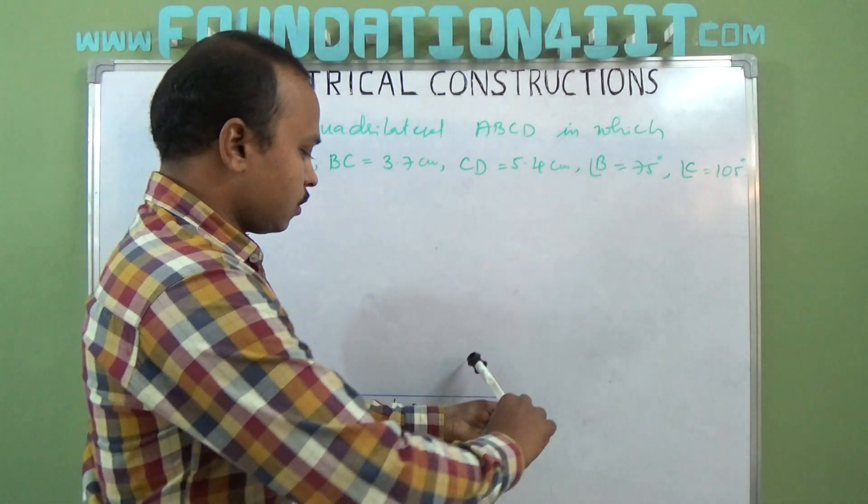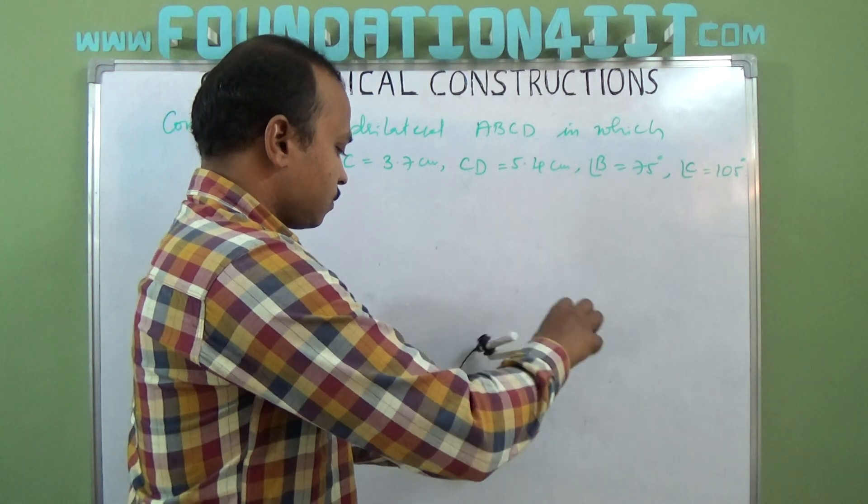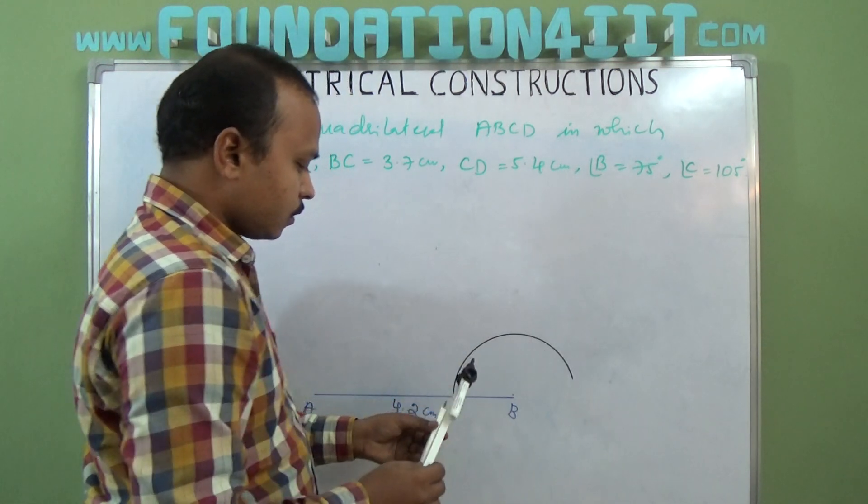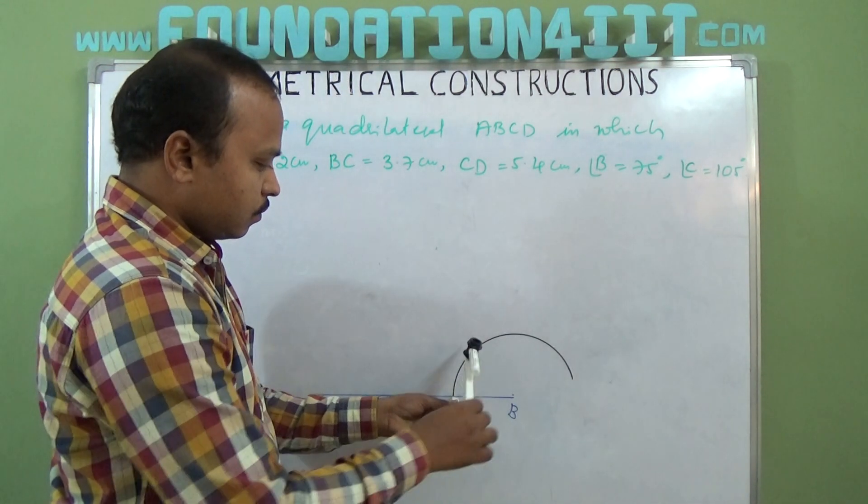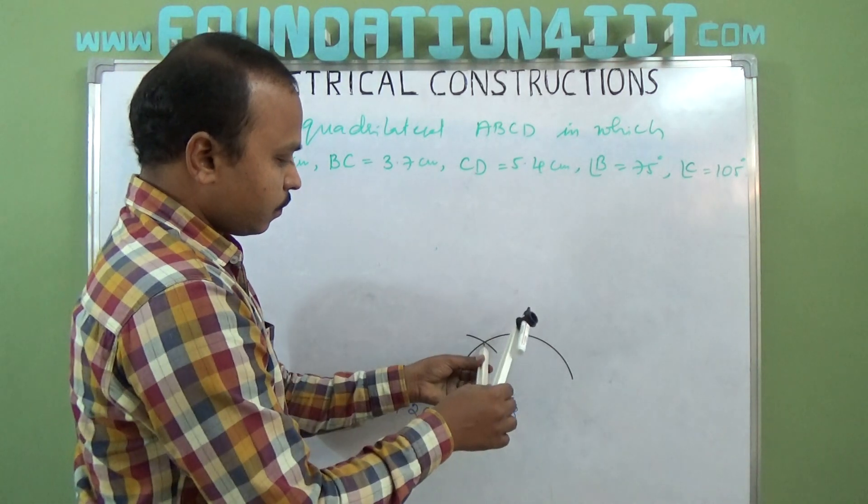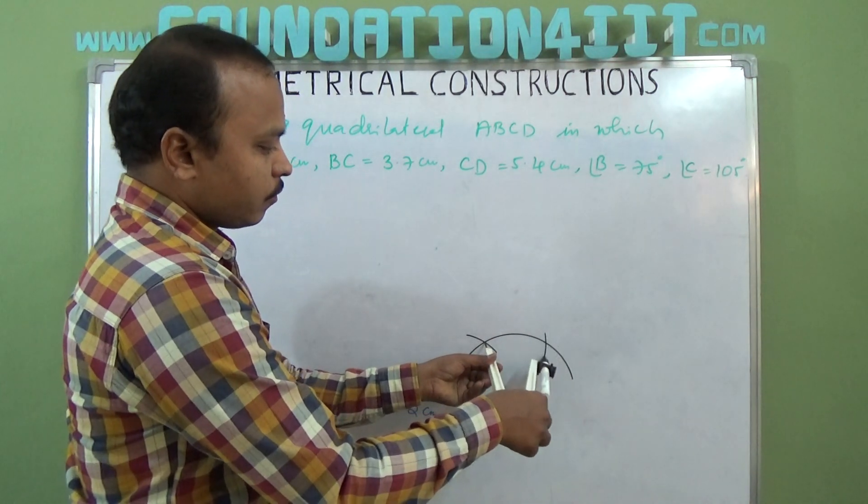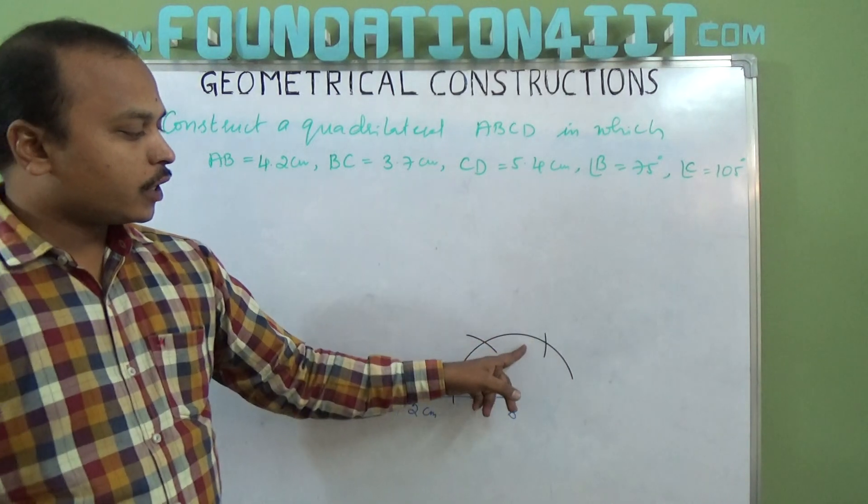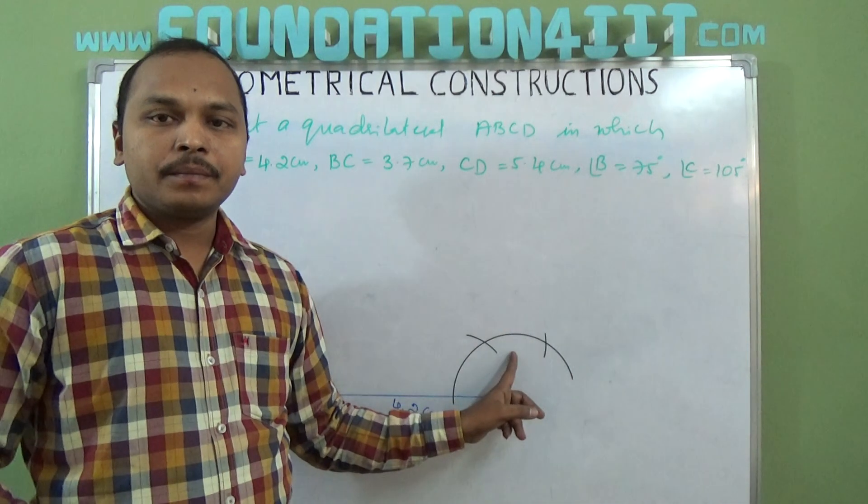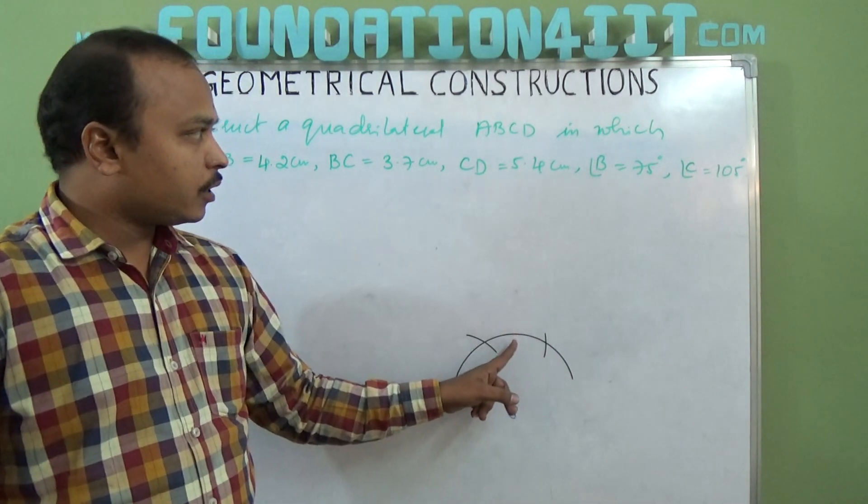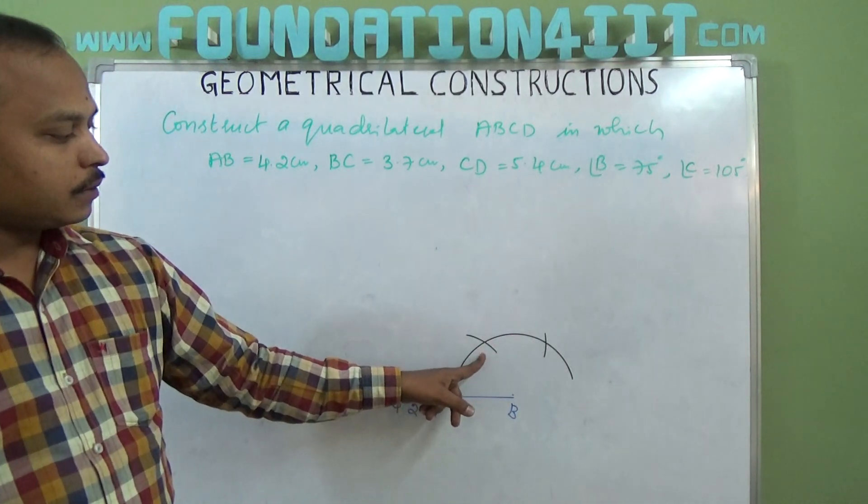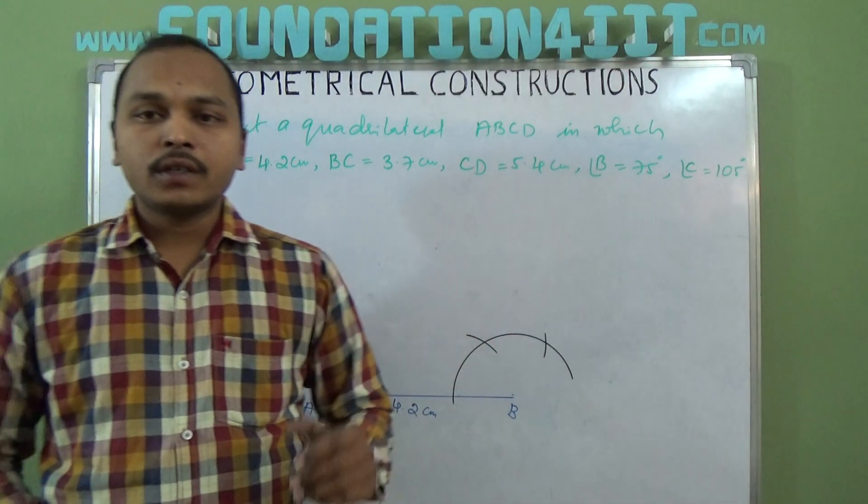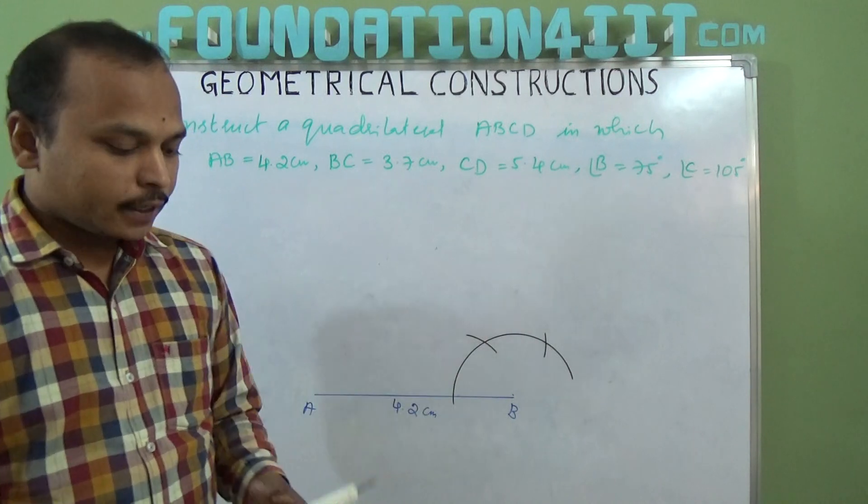You have to draw 60 and 120. If you bisect between 60 and 120 you get 90. Again between 90 and 60, if you bisect, 75 will come. So we should get the 90 angle first.